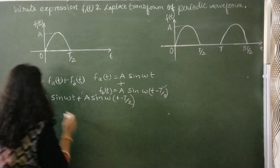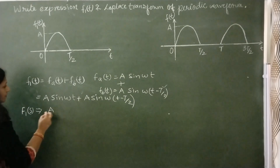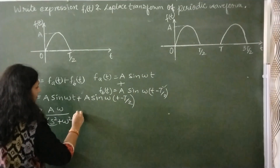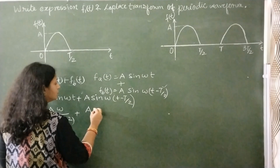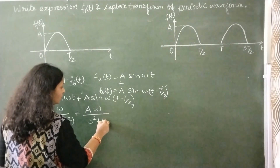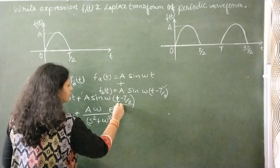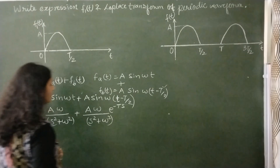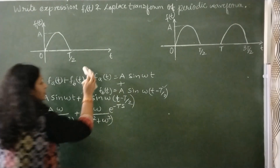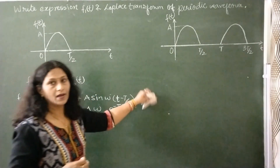We can take the Laplace transform of F1(T): the transform of A·sin(ωT) is Aω/(S² + ω²), and for A·sin(ωT − T/2), it is again Aω/(S² + ω²) multiplied by e^(−TS/2) due to the time shift. So this is the Laplace transform F1(S), obtained by the summation of two sine waveforms with time shifts of T/2 and 0.